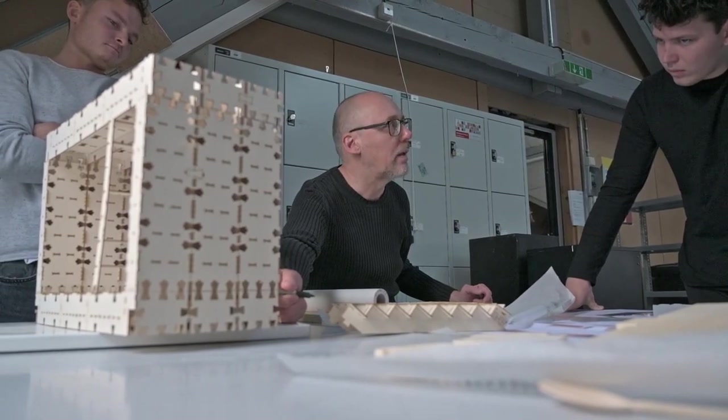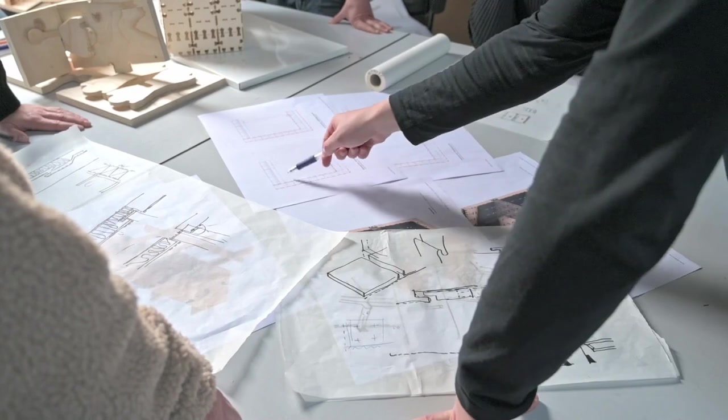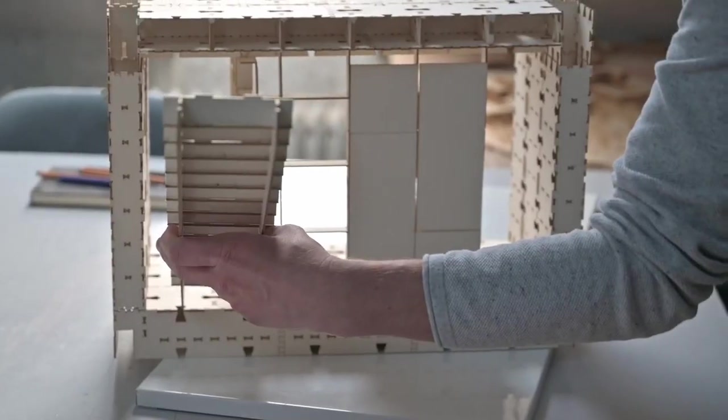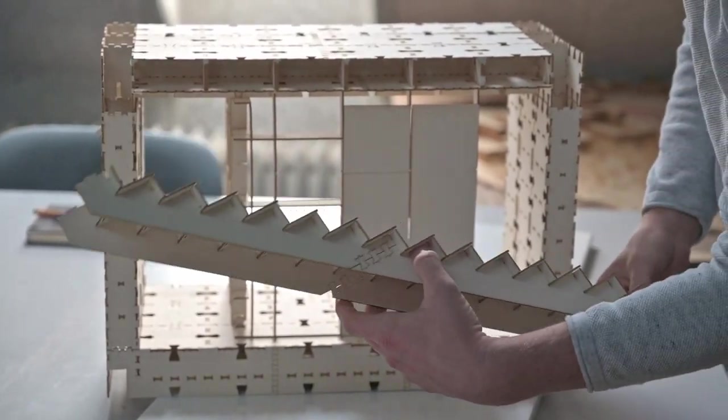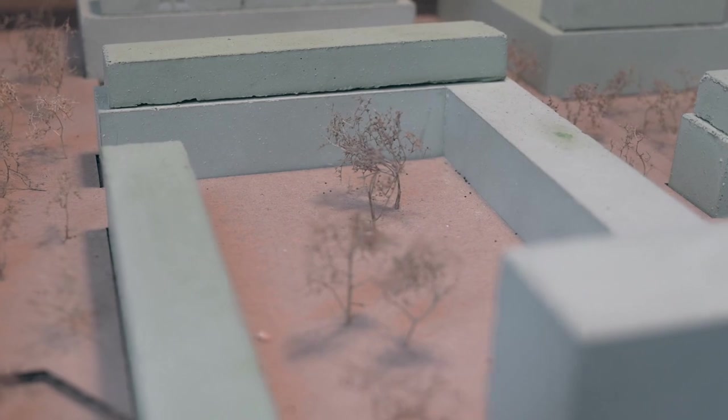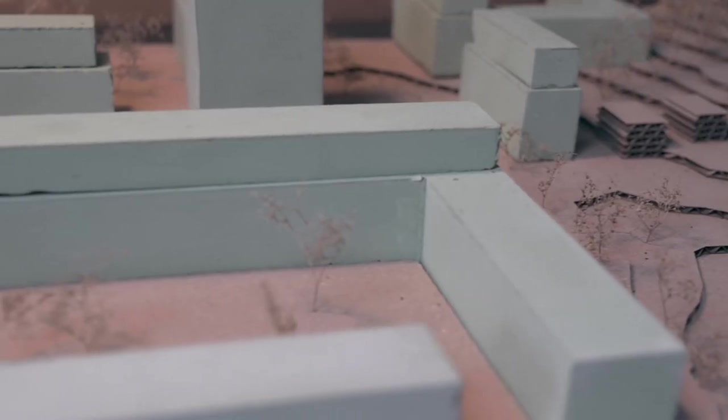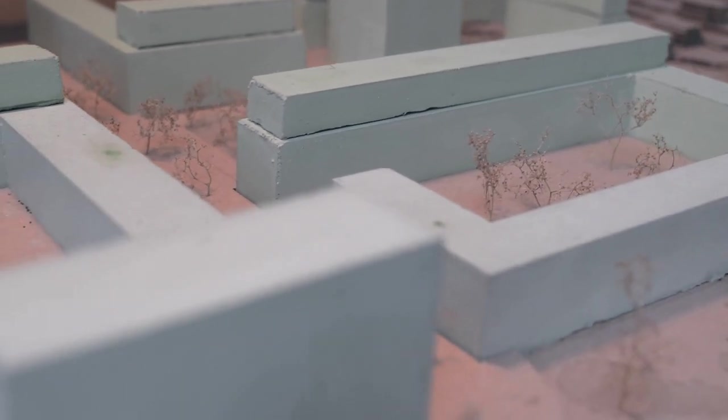The previous examples of architectural models always referred to design. The model is a building block of an iterative planning process. This is different with the presentation model. Here, a seemingly finished idea should be sold to the audience, but in principle, it's always about receiving feedback.